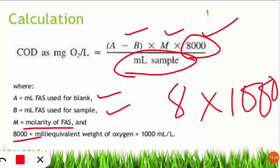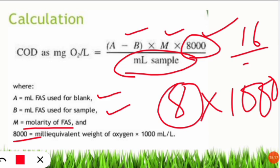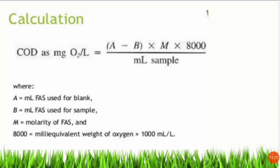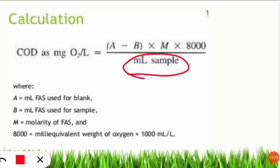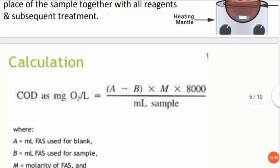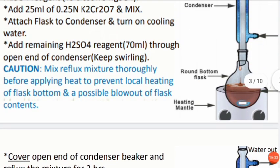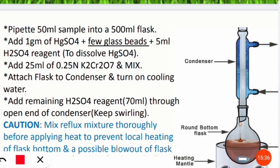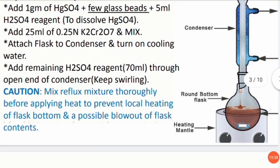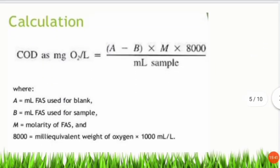In the formula, 8000 equals 8 × 1000, where 8 is the equivalent weight of oxygen — that is, atomic weight (16) divided by valency (2). The ml sample in the denominator is the volume of sample taken for the experiment. Since we pipetted out 50 ml of sample, the denominator will be 50 ml.